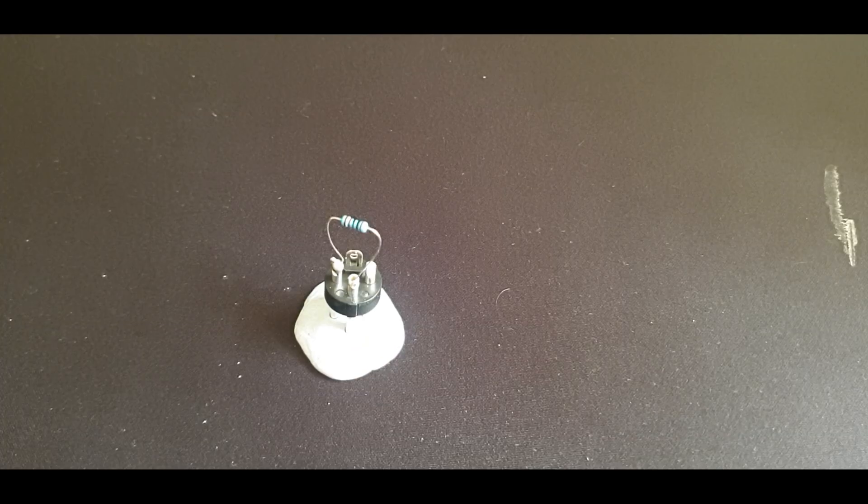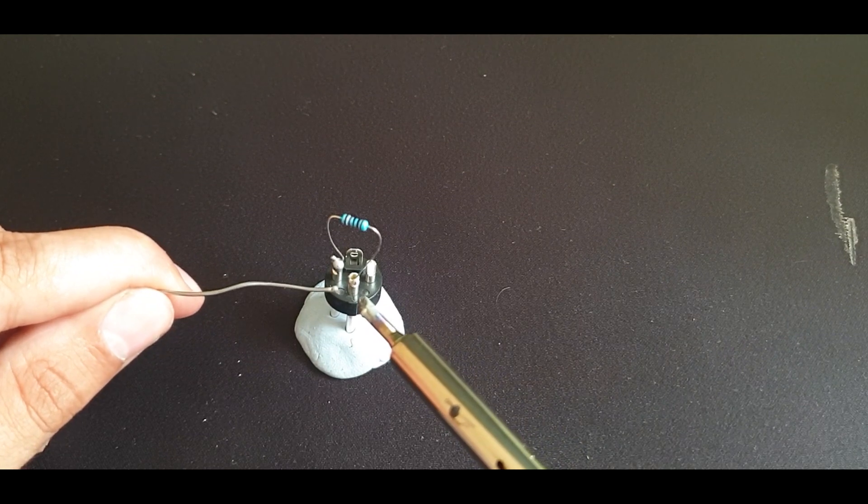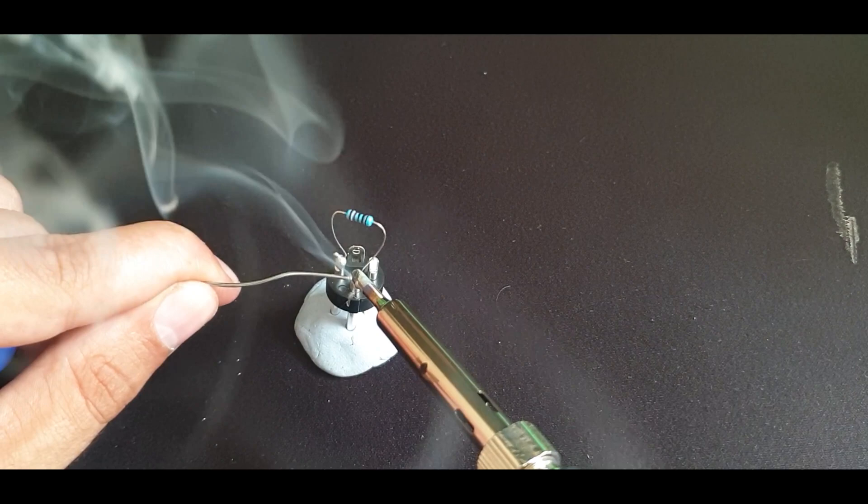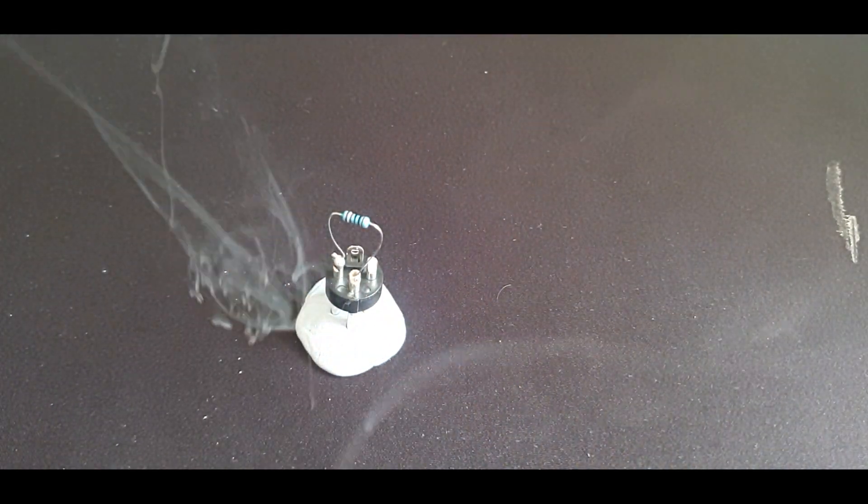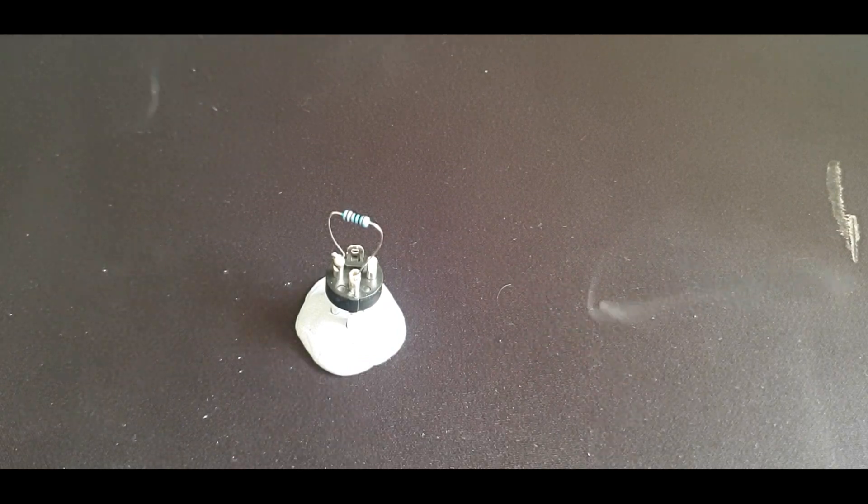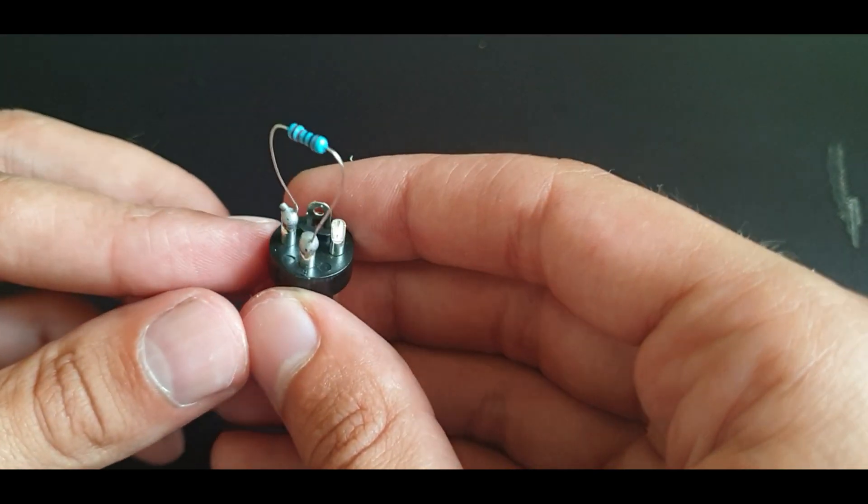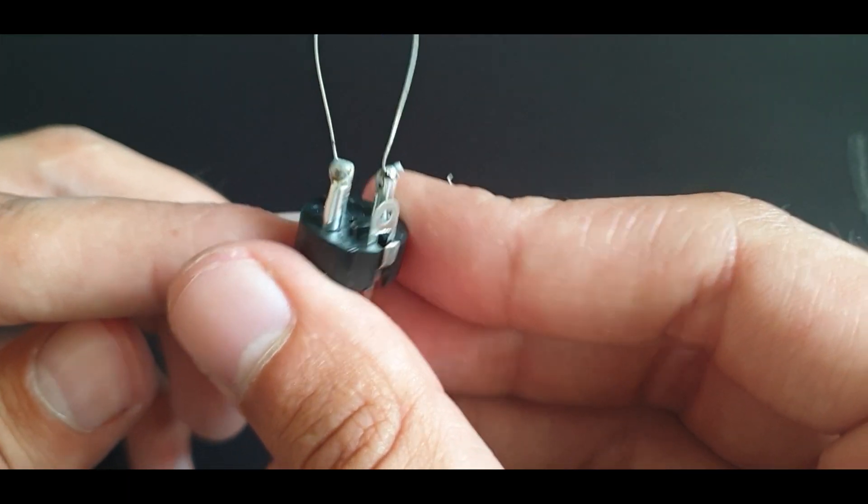Okay, so we're going to repeat the process. We're going to put the other side of the resistor into pin number three and solder that in. Once you finish the soldering process, the finished result should look something like this.